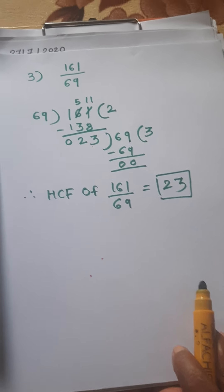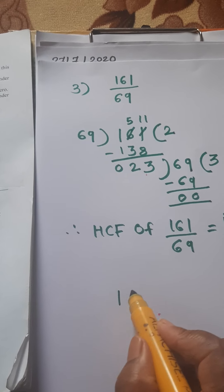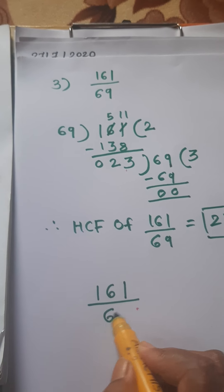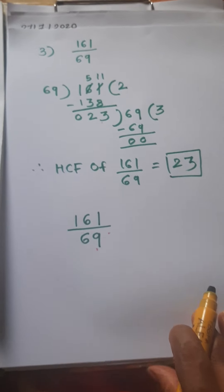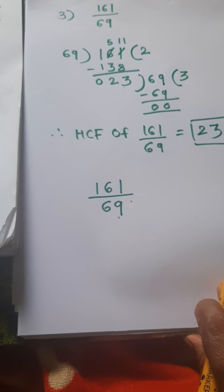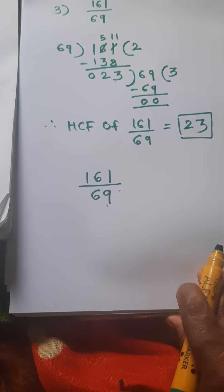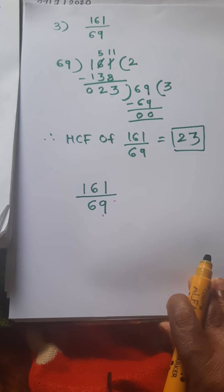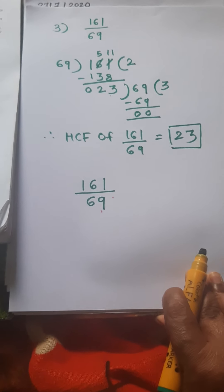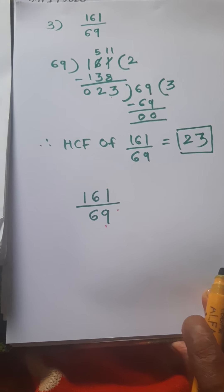Let's see the simplest form: 161 upon 69. While reducing the numbers, tables are very important. If you learn the tables by heart, you will find this very simple.